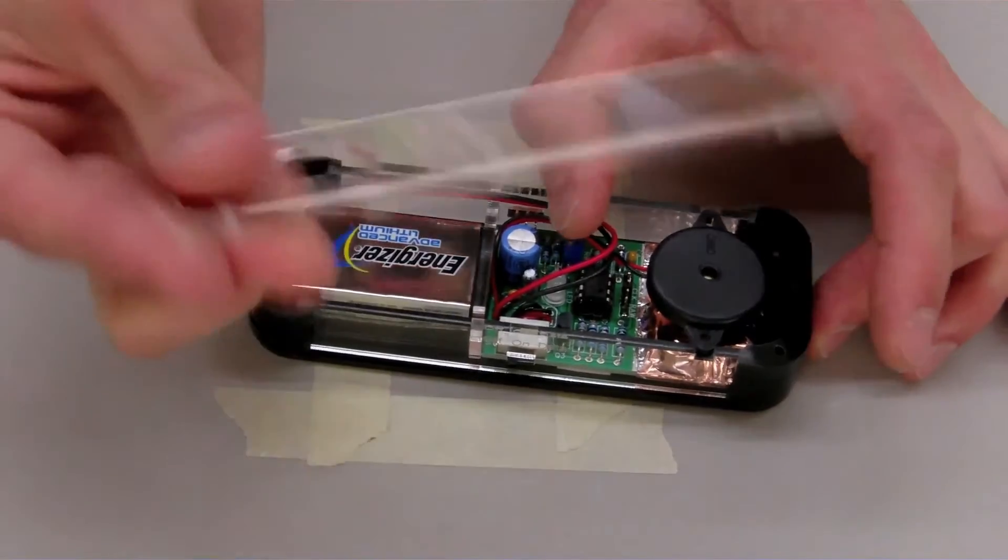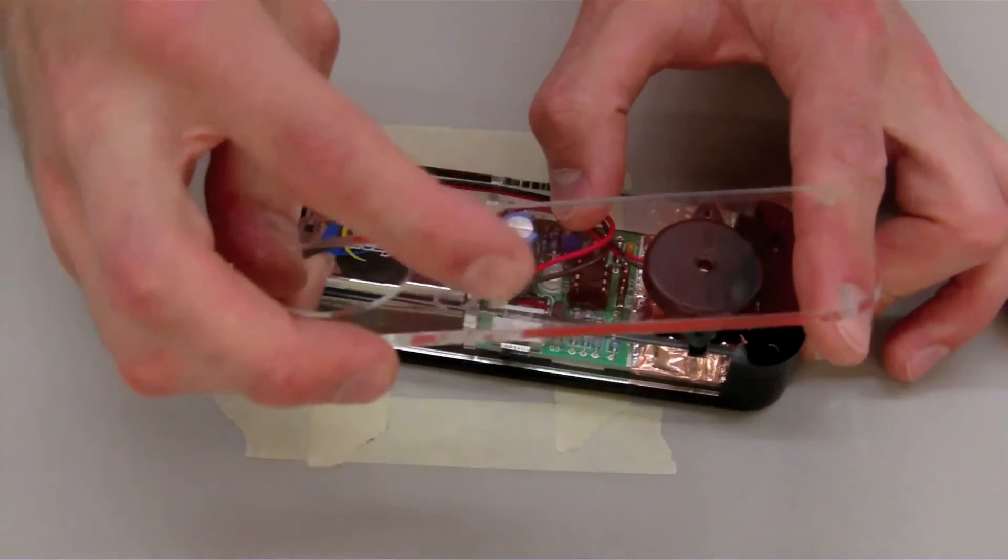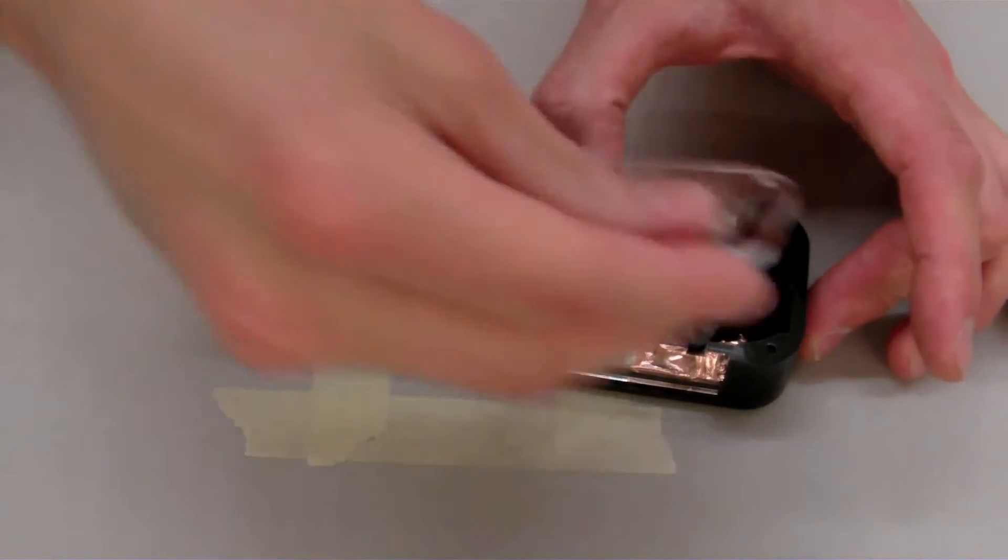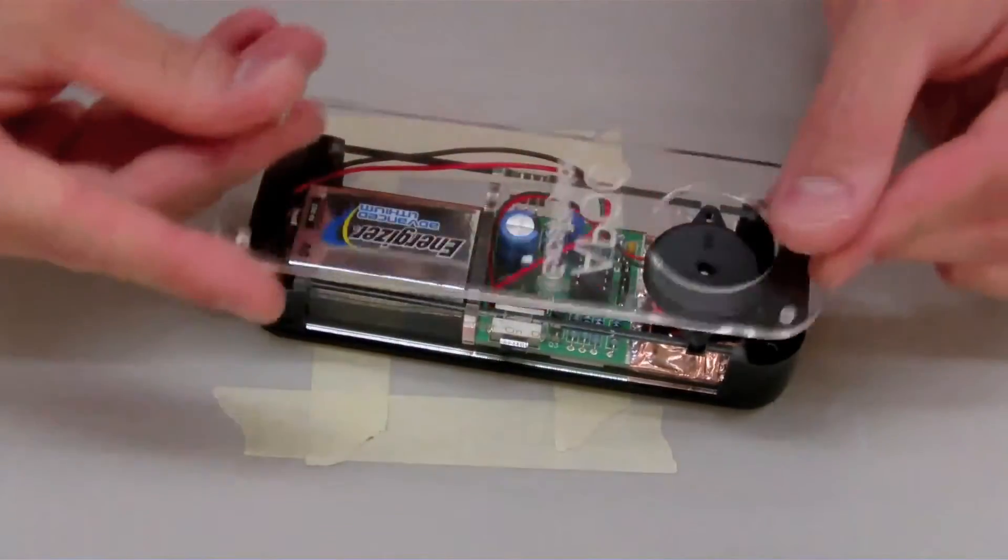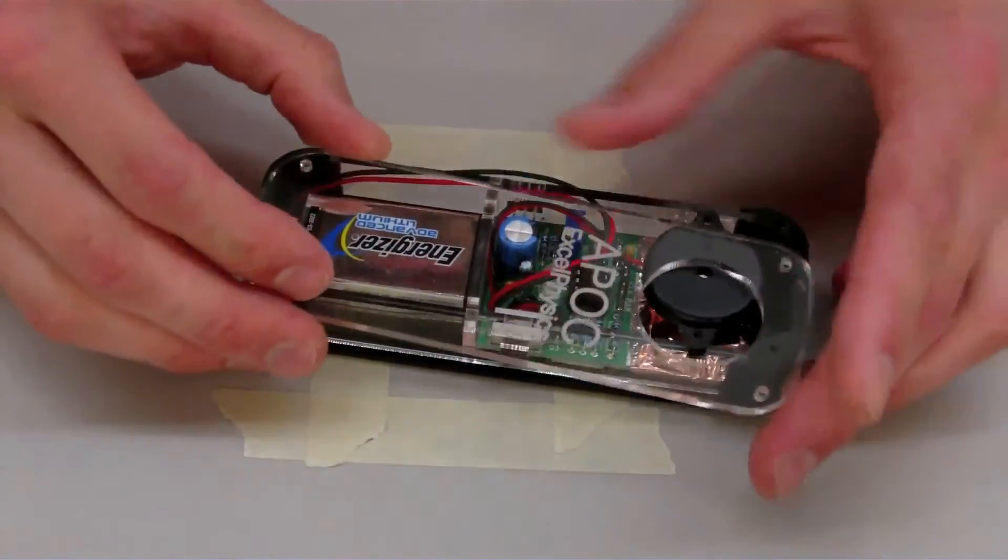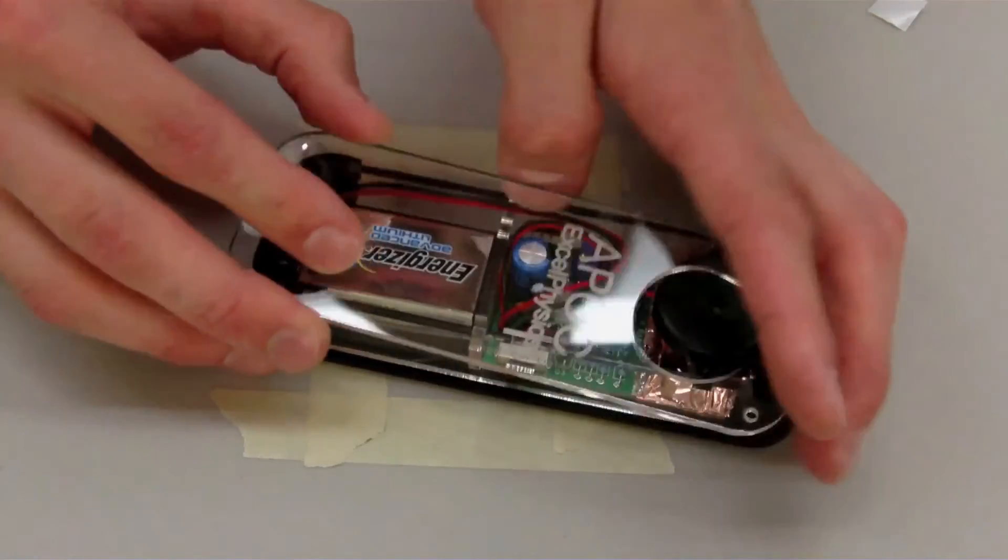And then we're going to put the top on. Make sure that the laser cut side, the rough side, is on the inside of the detector. You'll know because the writing will be backwards if it's on wrong. Go ahead and put it on. Be mindful of the cables. Make sure that they go inside and they're not in between the plastic.